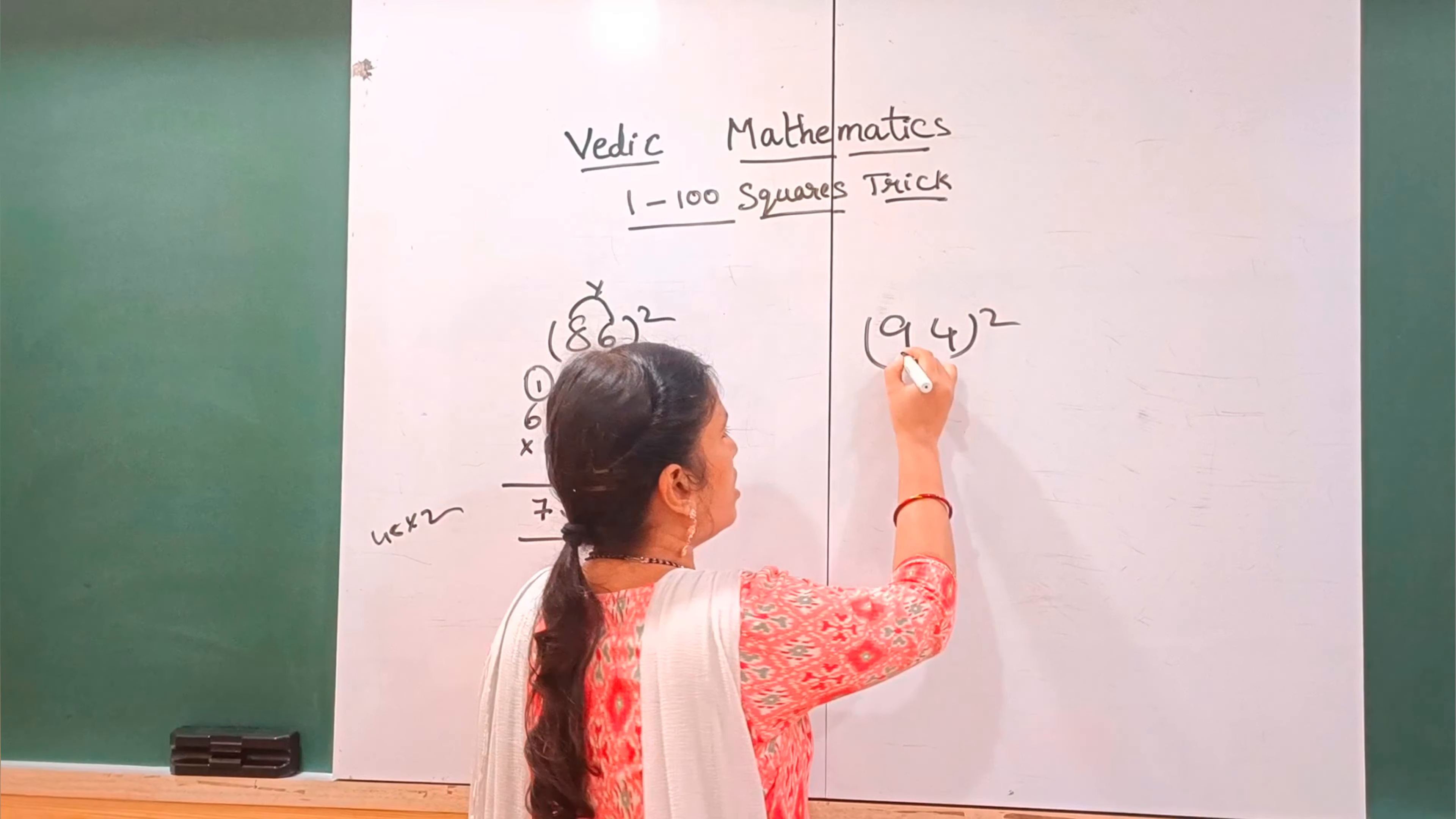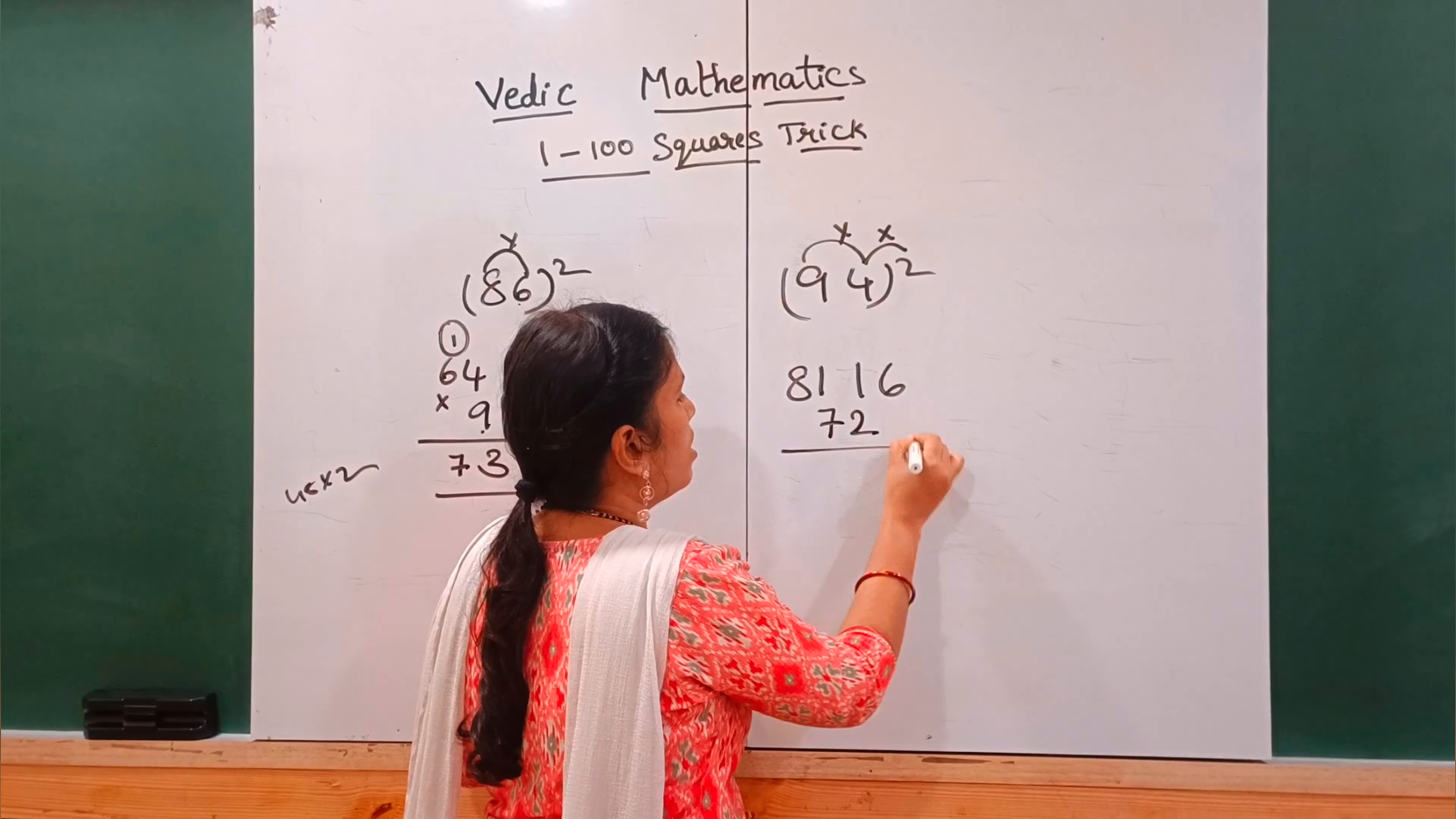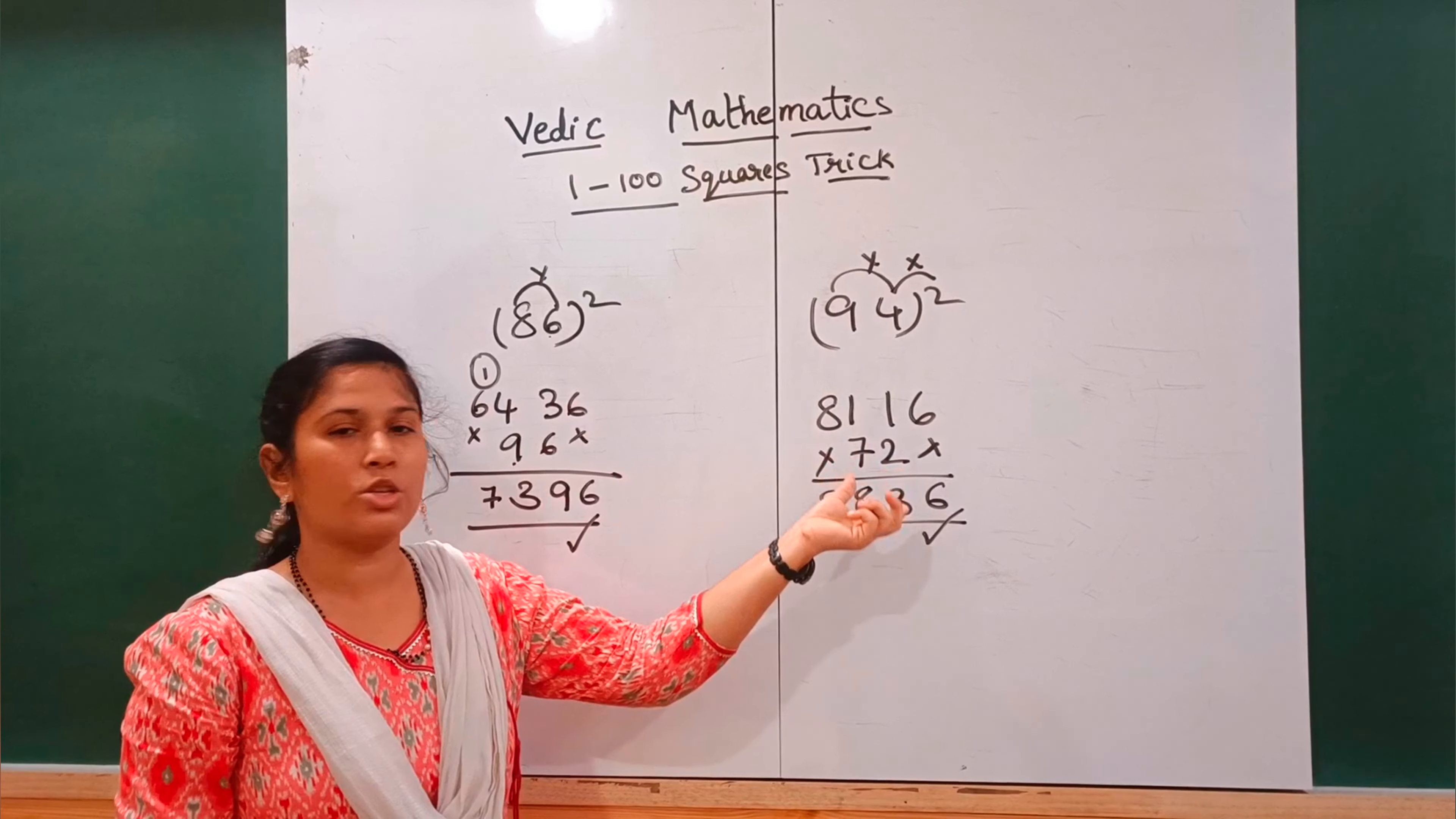Again 94. 9 nines is 81. 4 fours is 16. Okay. So 9 into 4 into 2. So 9 fours is 36, 36 into 2 is 72. Okay. So 6388 is the answer. So this is the answer.